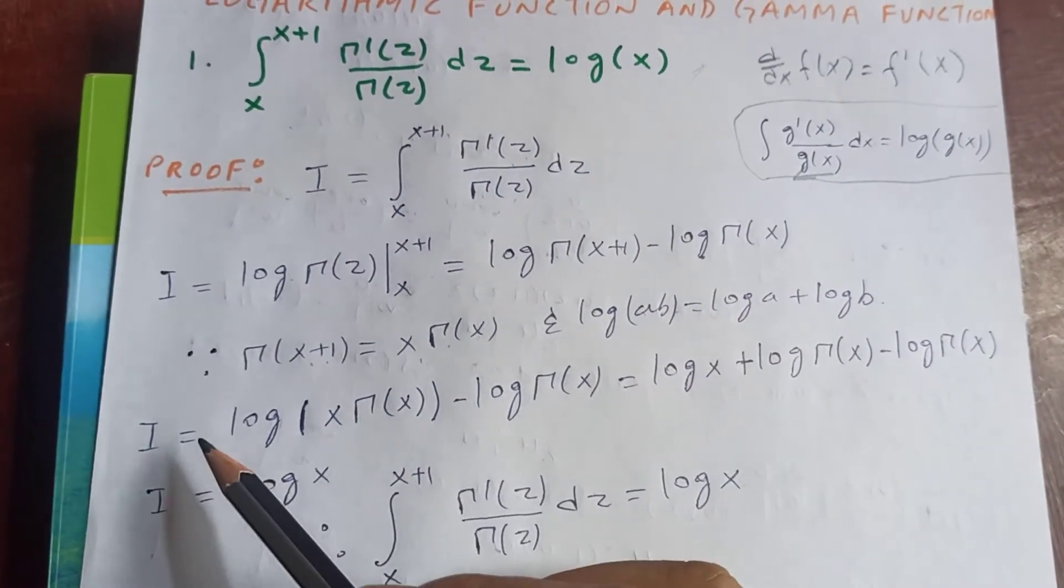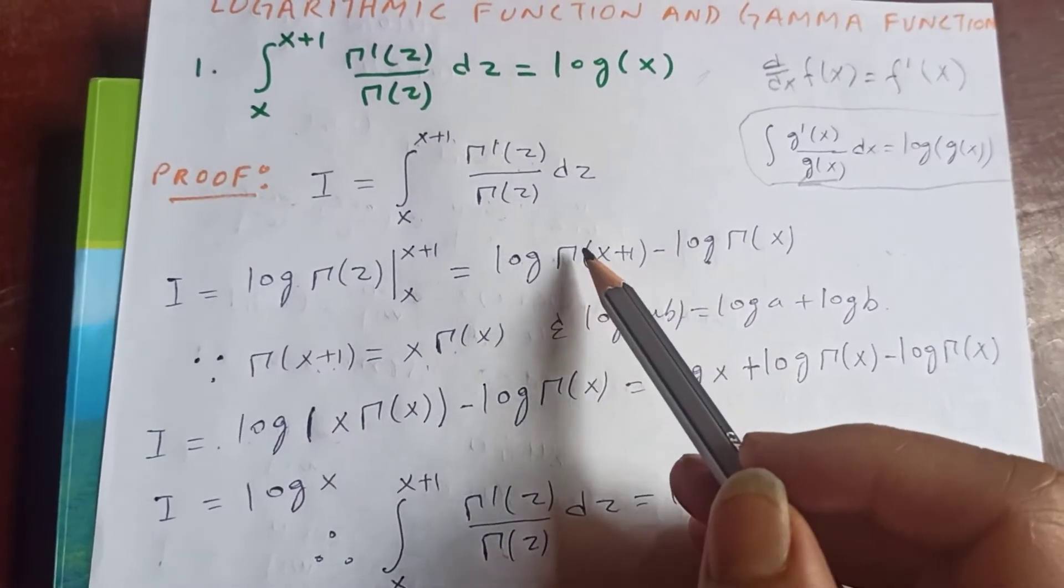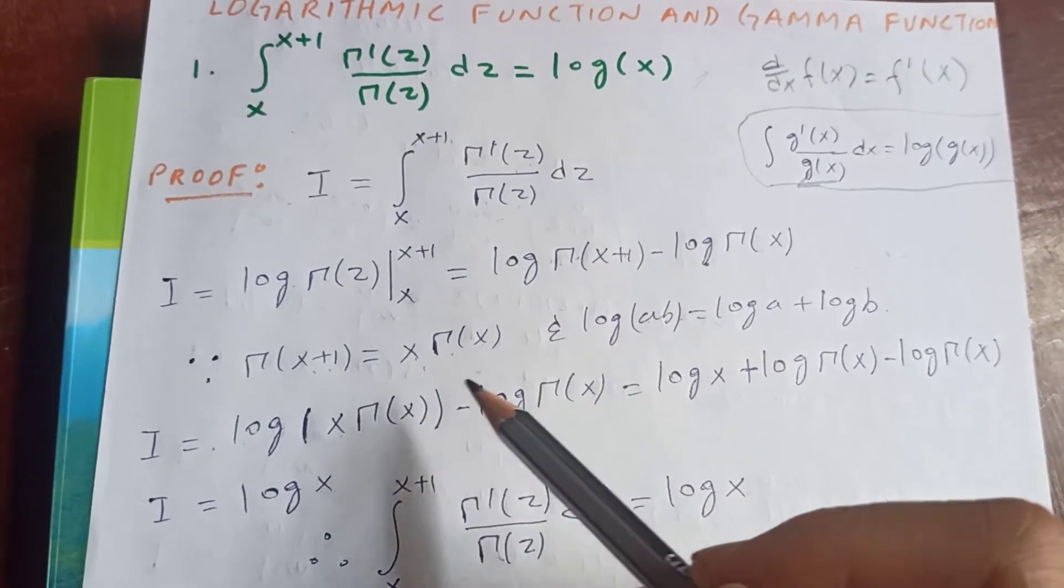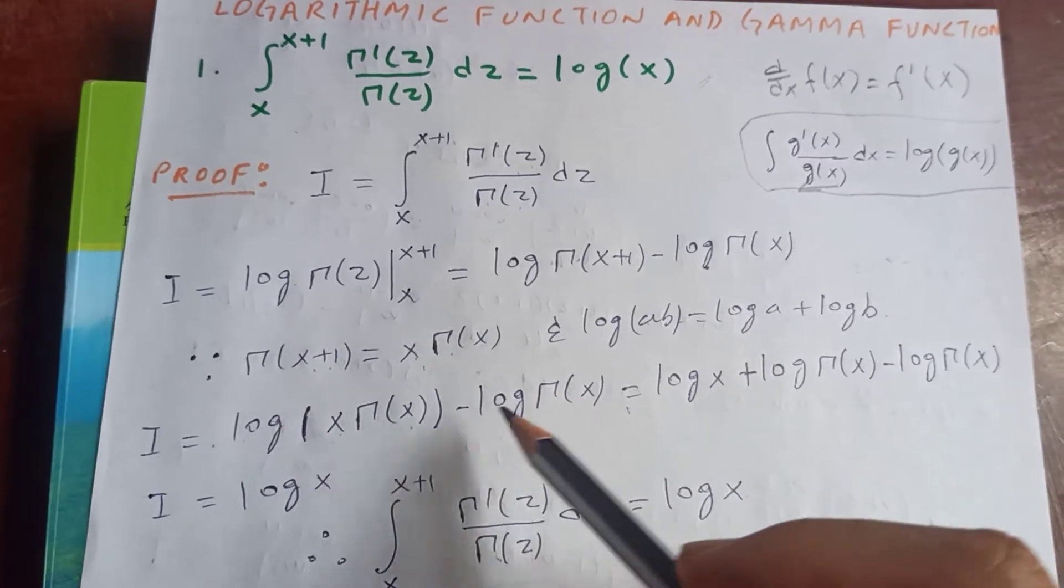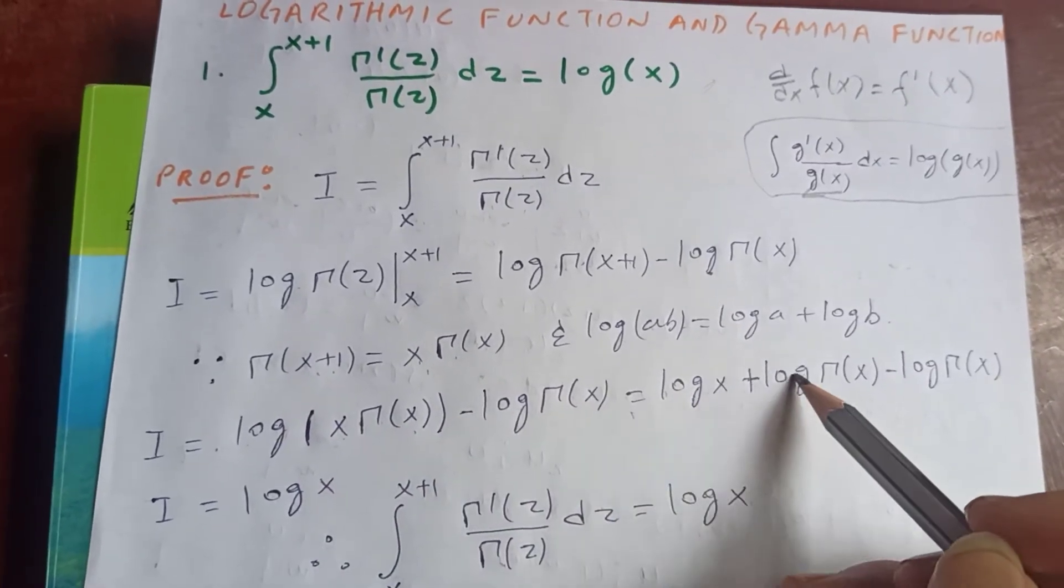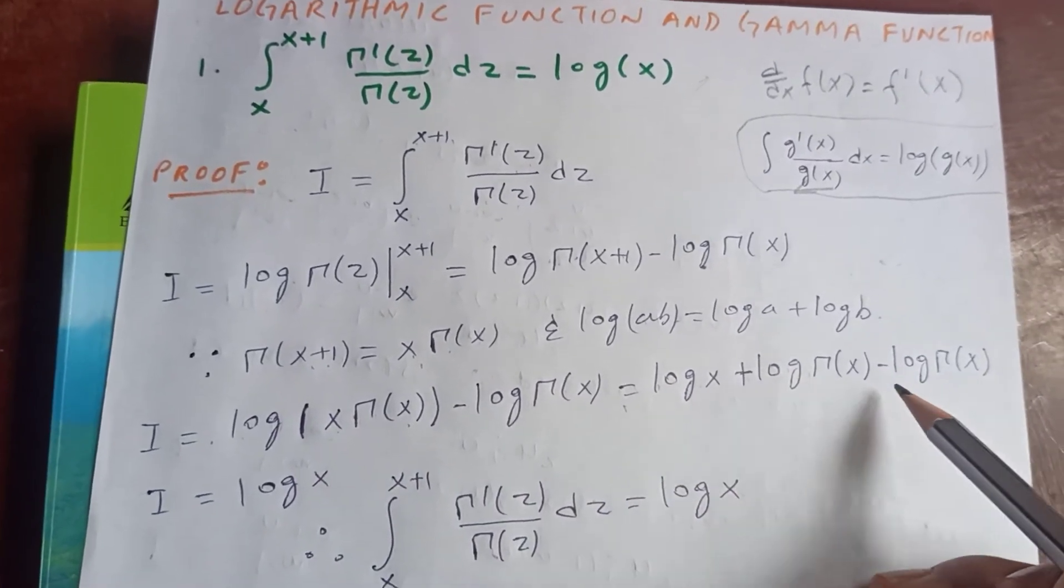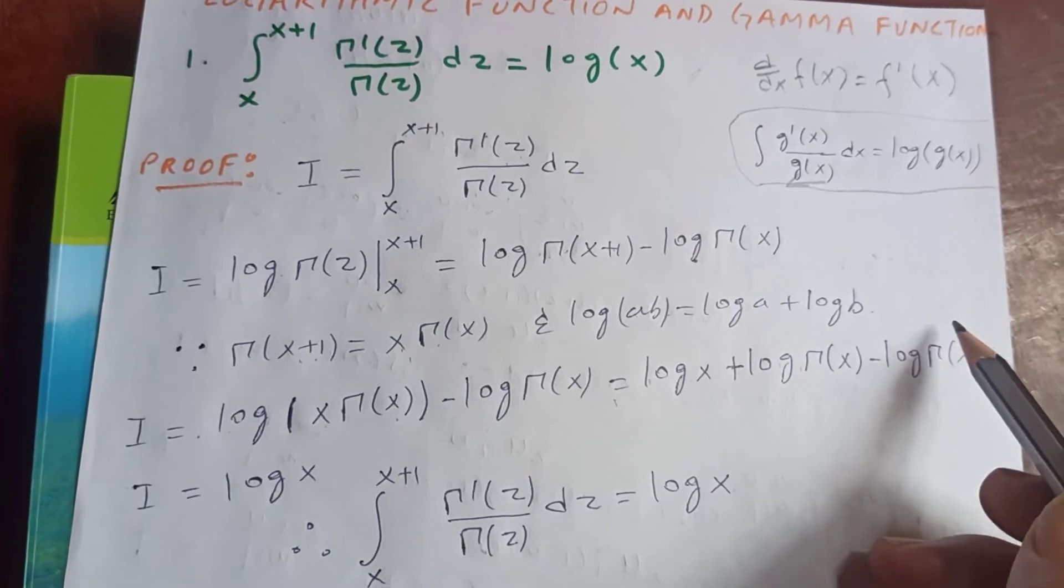Then you will get I is equal to log of gamma x plus 1, which is x times gamma x, minus log gamma x, which is log ab equals log x plus log b, then is log gamma x minus log gamma x cancel out.